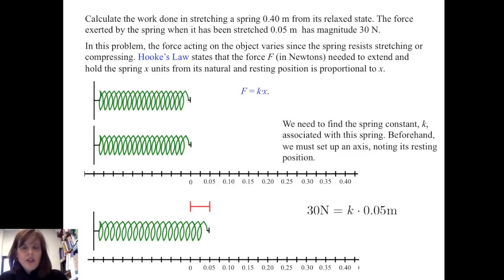So if we stretch the spring from its resting position at zero meters to a position 0.05 m away, then we've been told that there's a magnitude of 30 newtons of force involved. So we set up 30 N = k · 0.05 m.